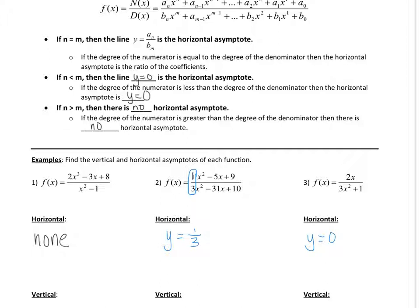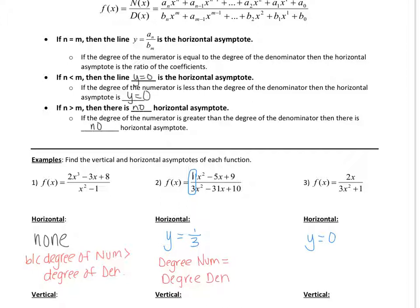We can write explanations for these. The first one: there was no horizontal asymptote because the degree of the numerator was greater than the degree of the denominator. The second one: the horizontal asymptote was y equals one-third because the degree of the numerator was equal to the degree of the denominator. The last one: the horizontal asymptote was y equals zero because the degree of the numerator was less than the degree of the denominator.